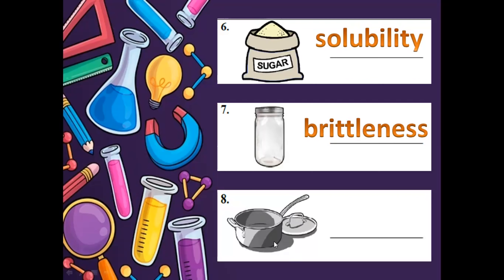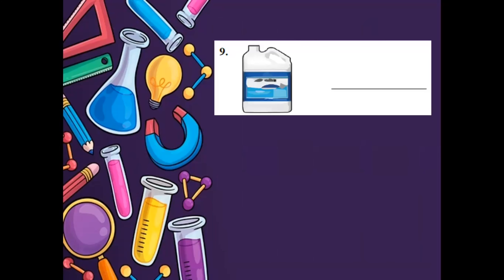Number eight — pots or pans, kaldero. We're going to use the property thermal conductivity. Why? Mabilis siyang mag-absorb ng heat, and then the heat absorbed is transferred to other materials. For example, naglagay ka ng water, magpapakulung ka — so you need heat. Thermal conductivity ang property ni pots.